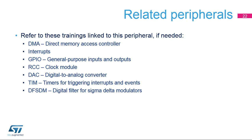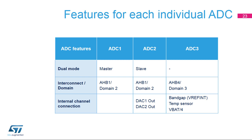These peripherals may need to be specifically configured for correct use with the ADCs. Please refer to the corresponding peripheral training modules for more information. The STM32H7 embeds three ADCs. ADC1 and ADC2 can be configured to work together in dual mode so that each analog-to-digital conversion can be synchronized between the two modules. ADC3 works as a standalone converter.